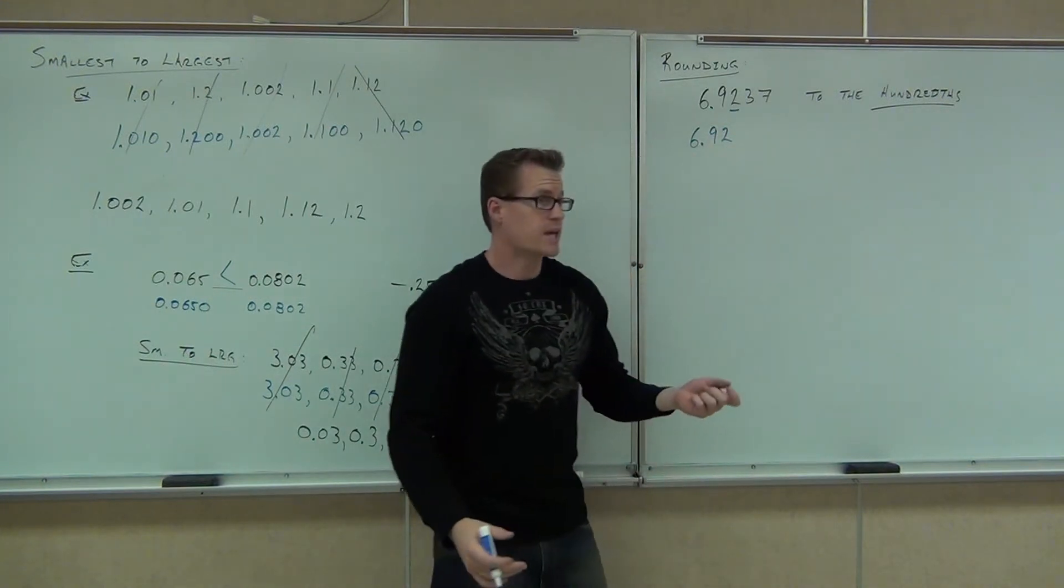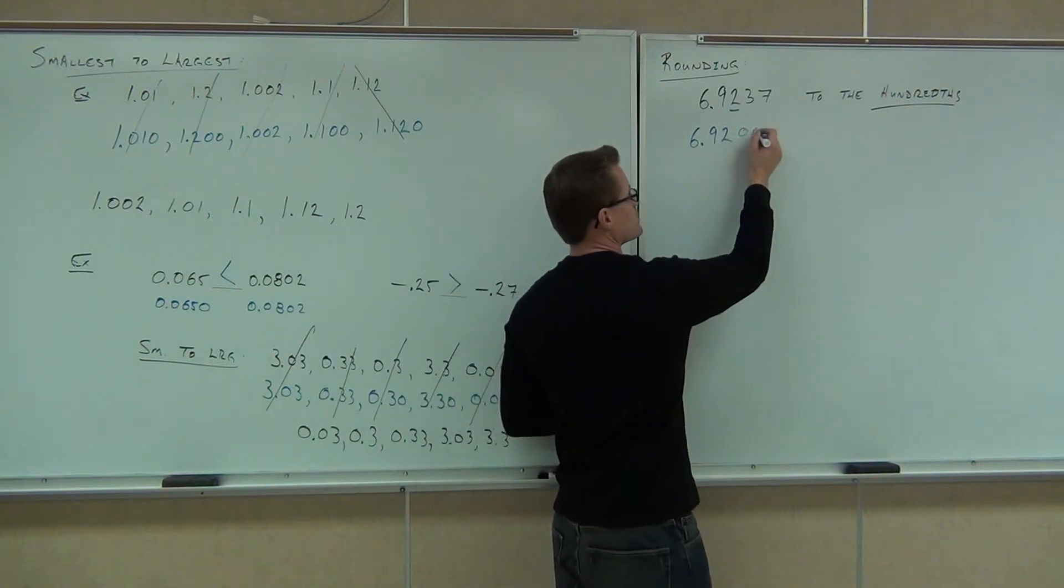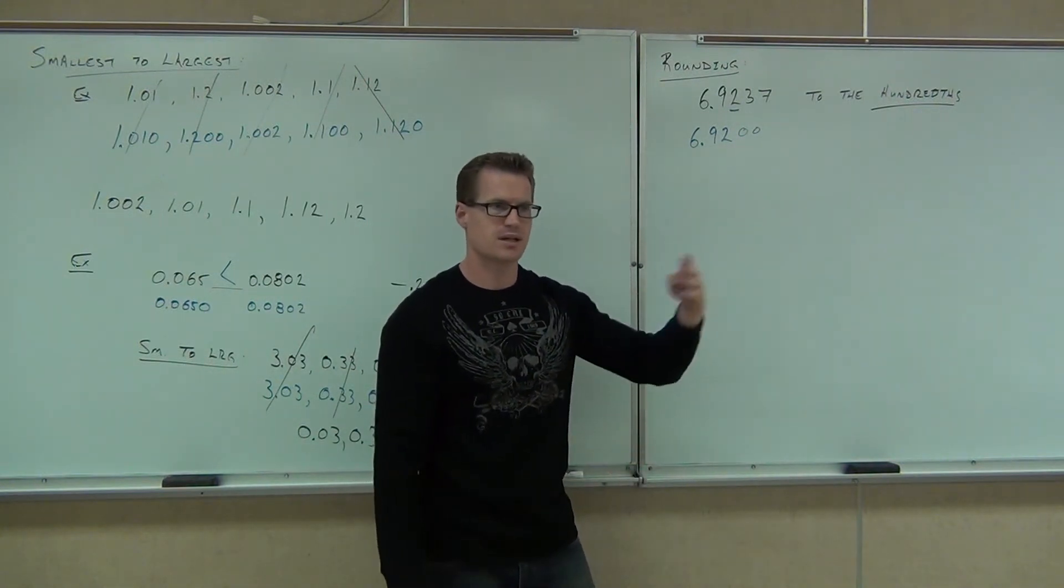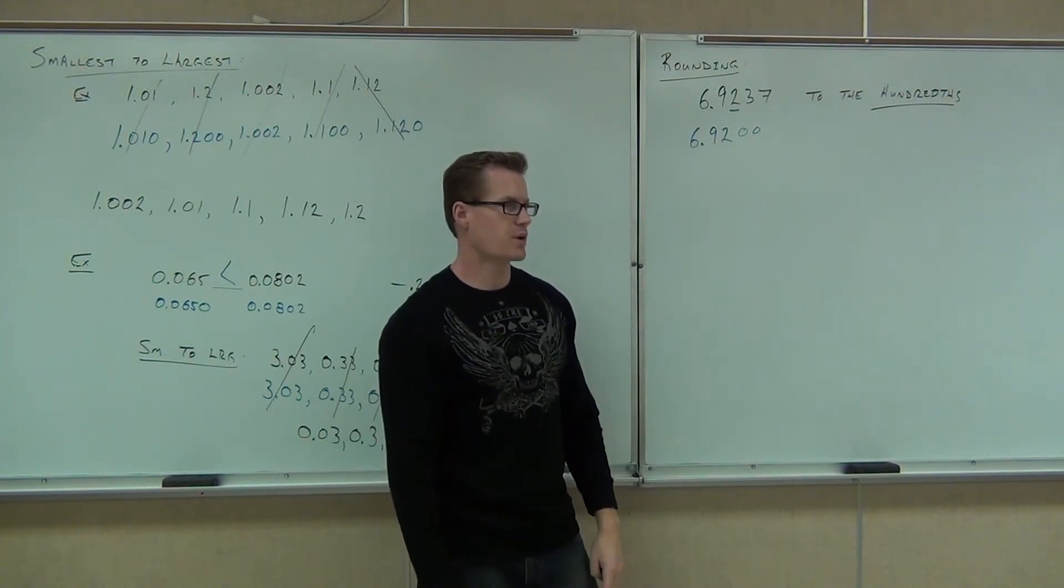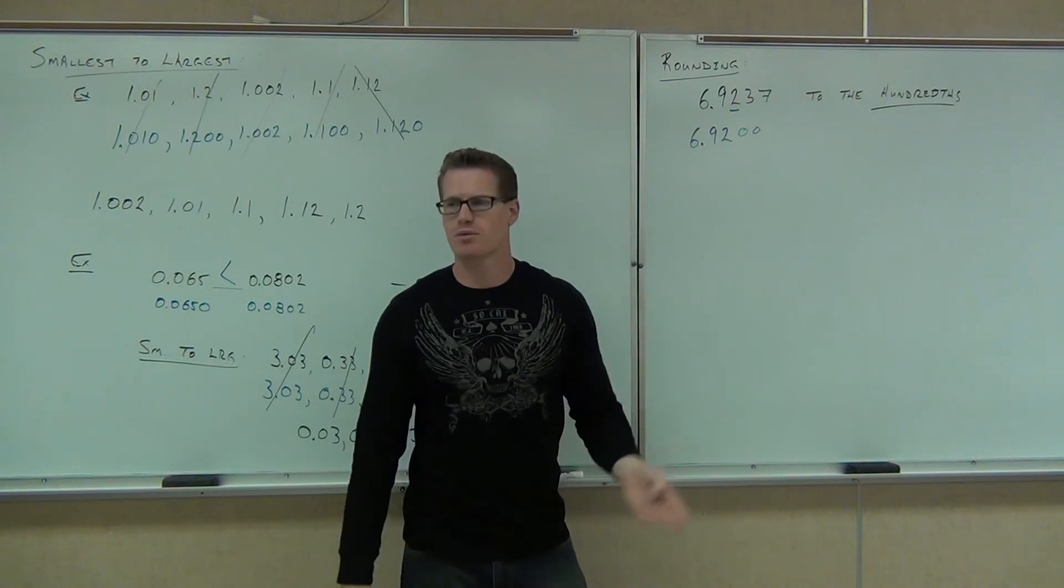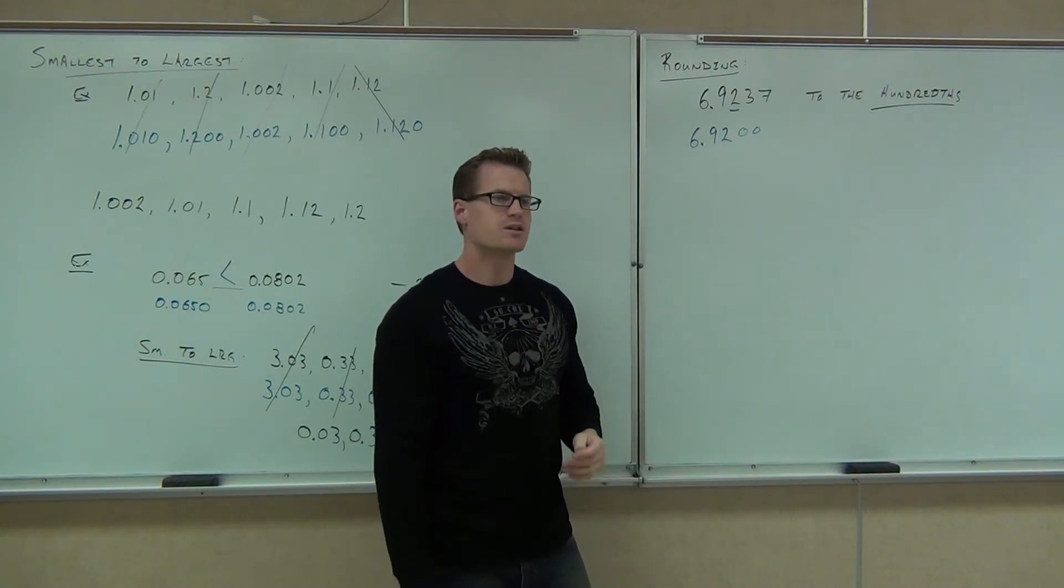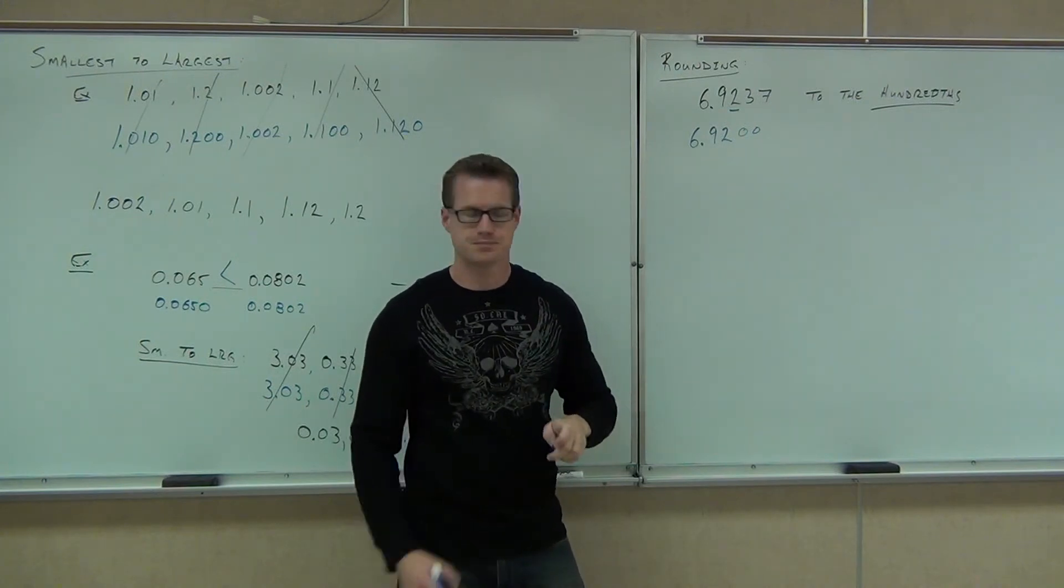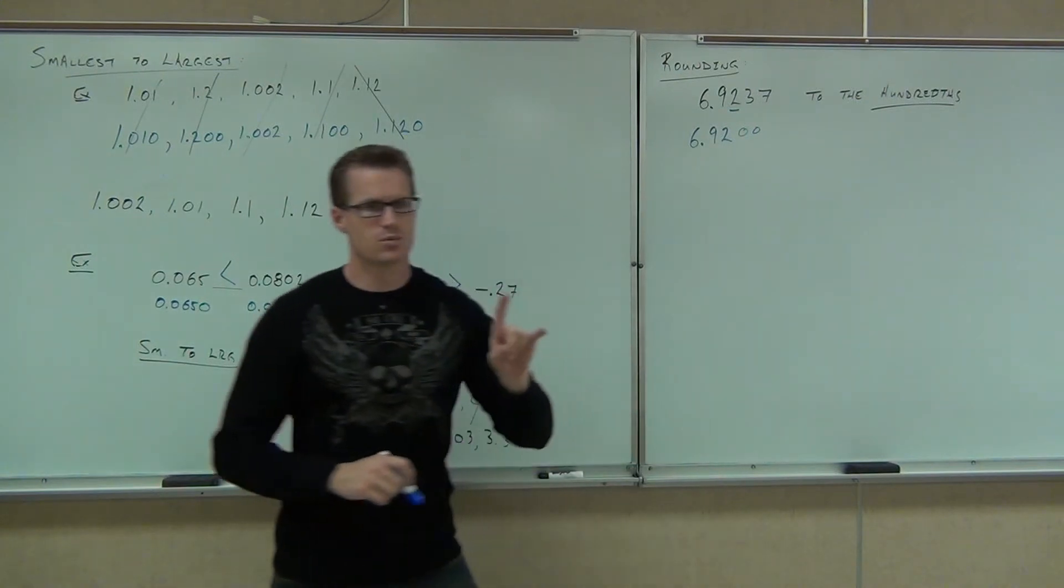You can if you want put zero zero. Do the zeros matter though? Not really. After the decimal place you can omit them. So with rounding with decimals, you can put zero zero if you want or you can leave it without the zero zero. Some people like to put the zero zero signifying that it's a rounded number.